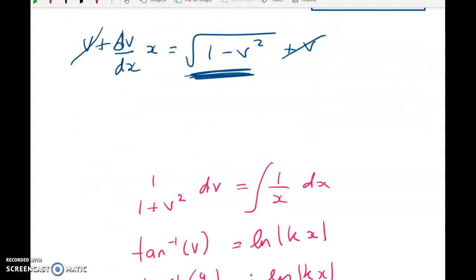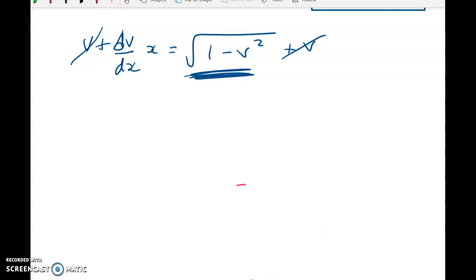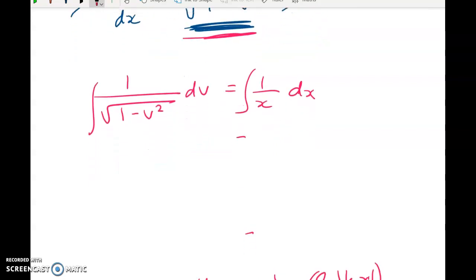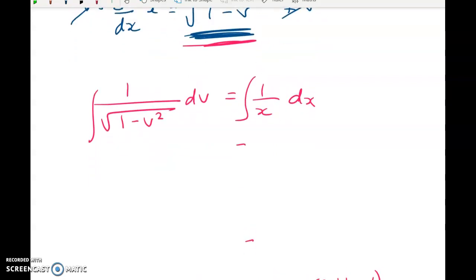So we get what? One over root 1 minus V squared dV is equal to one over x dx. And we're going to integrate both sides. Now, I just want to check my working so that I don't screw it all up. Over here, we get sine inverse of V is equal to the natural log of Kx. So V is equal to sine of natural log Kx.